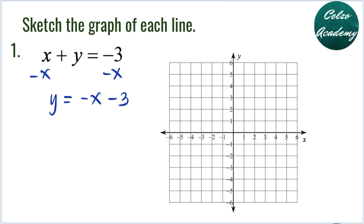Since it is now in the form Y equals MX plus B, the Y-intercept is negative 3 and the slope is negative 1, or negative 1 over 1. Write M as a fraction to make graphing easier. To graph this line, we begin by graphing the Y-intercept B equals negative 3.